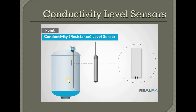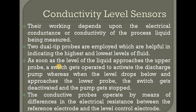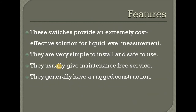It is an auto system — it is a motor. When the level is very low, in this case the motor is fully activated. It fits the properties of electrical resistance. It is used to provide an external cost-effective solution for liquid level and machine liquid level monitoring — cost effective, simple, installed and safe to use. They usually give maintenance-free service and generally have rugged constructions.